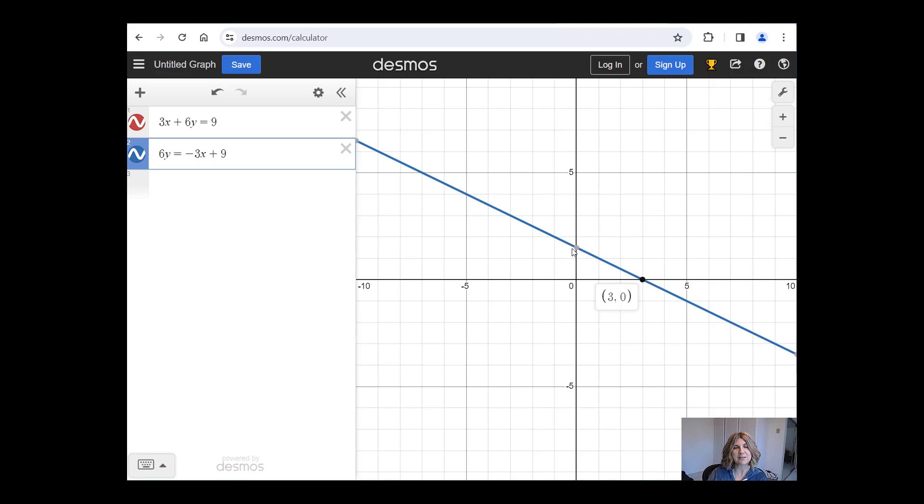So the point 3,0 is a solution to the system. The point 0,1.5 is a solution to the system. Any point on either line is a solution to the system.